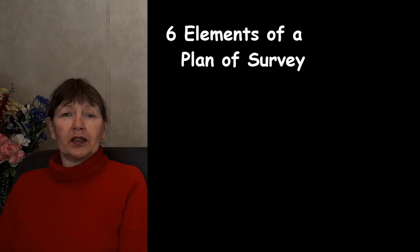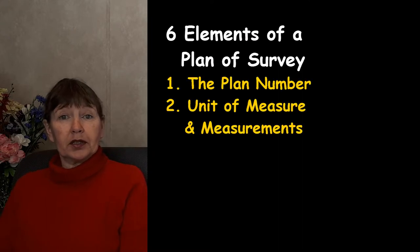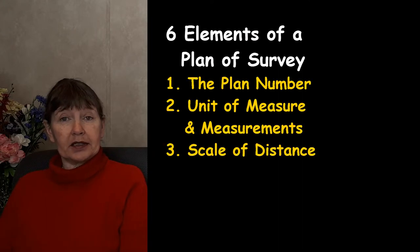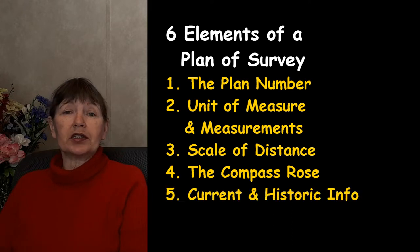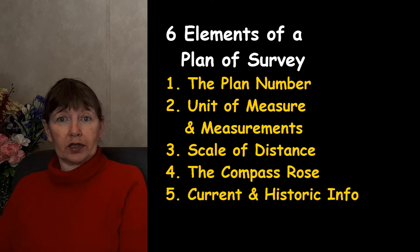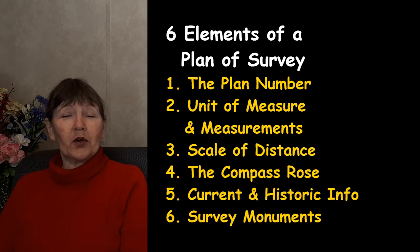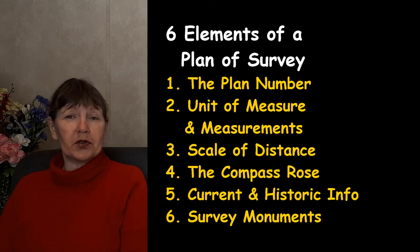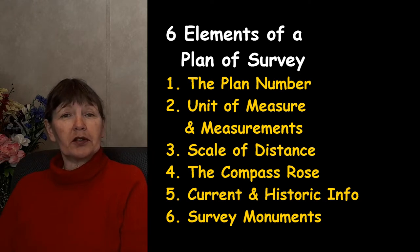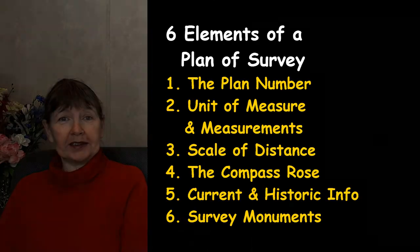A plan of survey includes six elements: there's a plan number, the unit of measure, the scale of distance, the compass rose, current information and historic information, and of course survey monuments — the legal markers which surveyors use to mark the boundary of the property on the land.